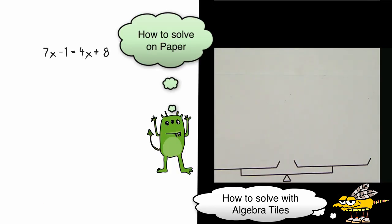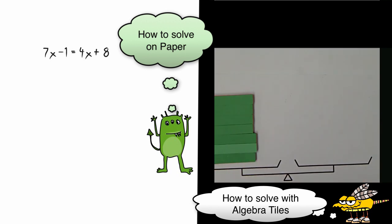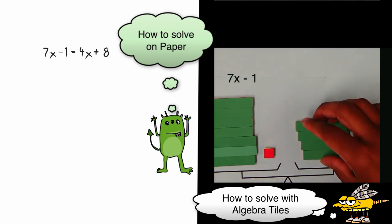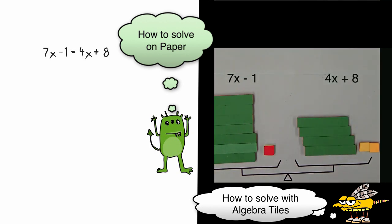I am now going to set up the problem in the hopes of finding the value of one of these x's. Put 7x's and a minus 1, red for negative. And on the other side, that is equal in value to 4x's joined with 8 positive 1 units.